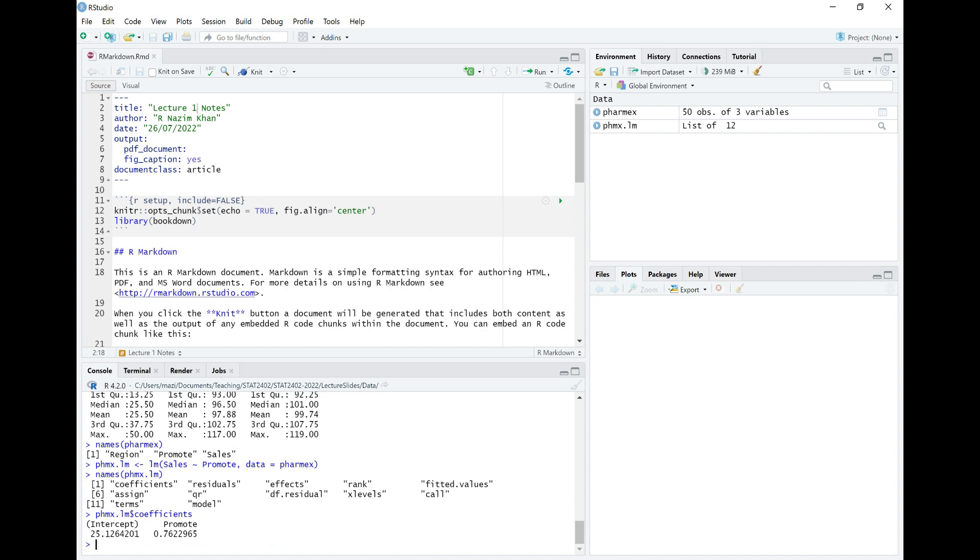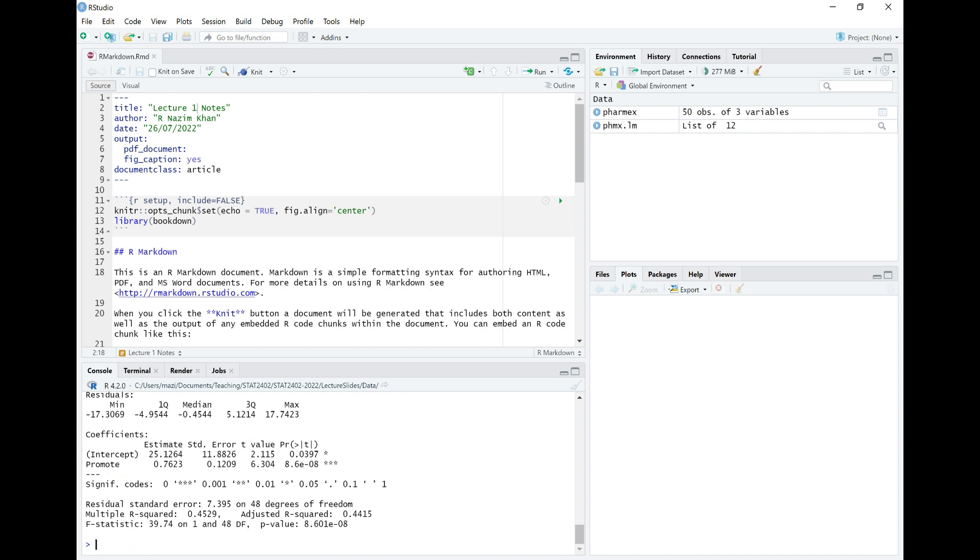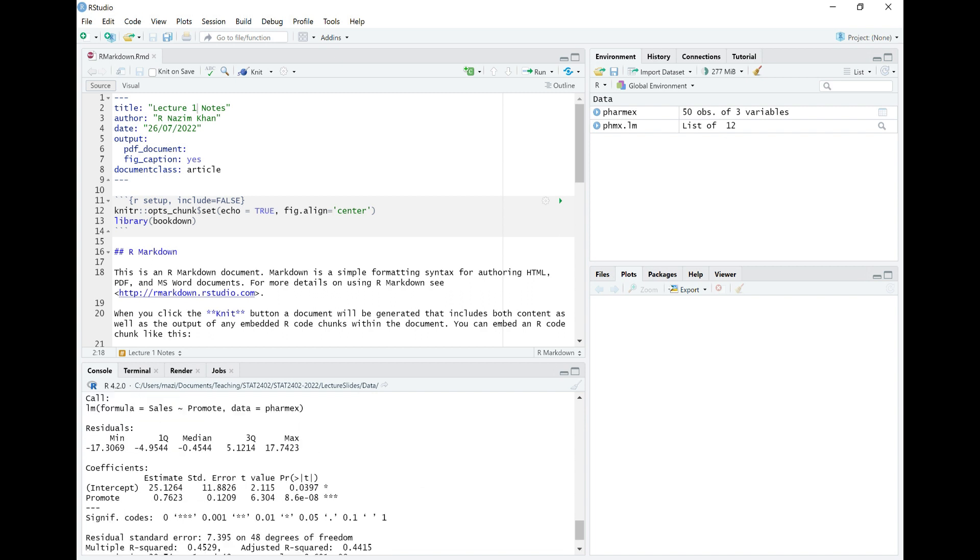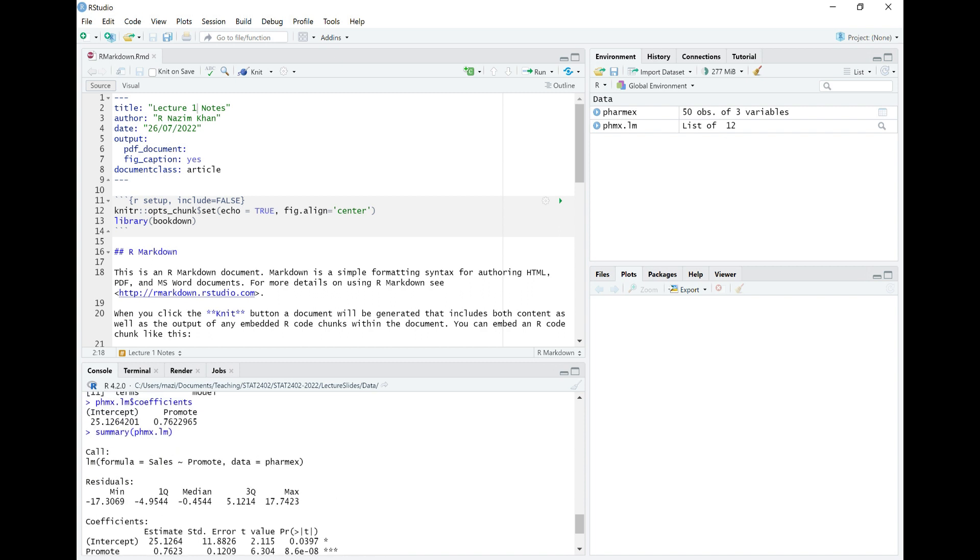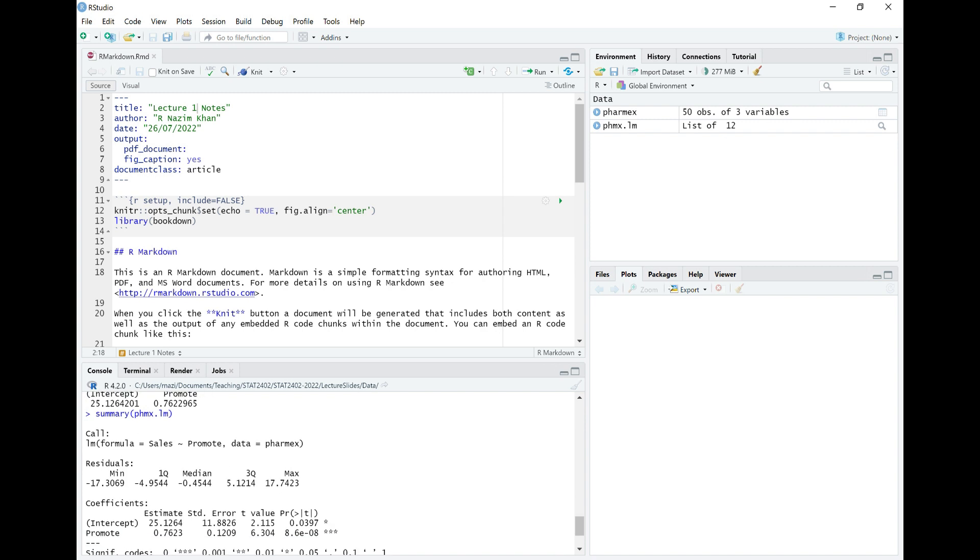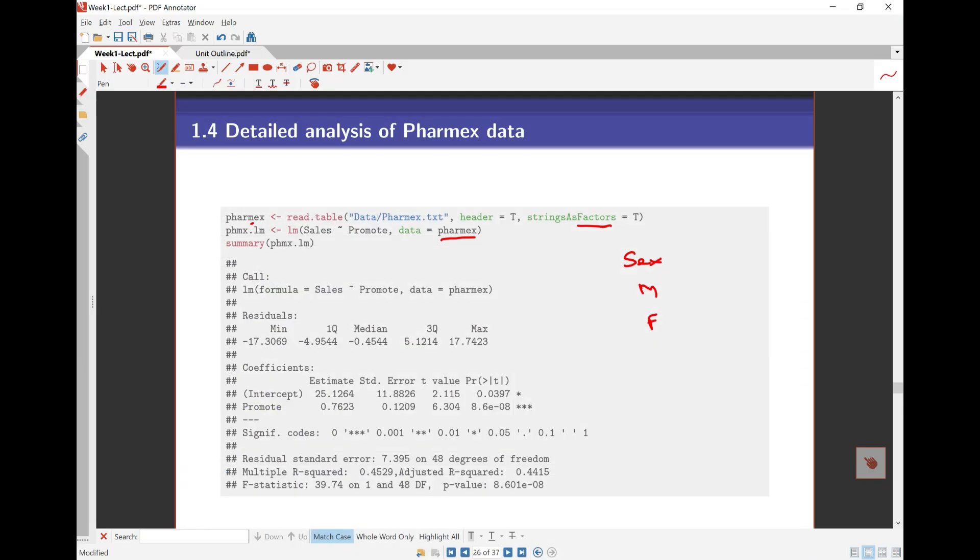And if I take a look at the summary of this, summary of Pharmex.lm, it gives me the full output as I have in my R slides. And it gives me the coefficient intercept is 25.12, which is the same as what I had here. And Promote is 0.76, the same as what I had over here. So I can extract all those things from my R output.